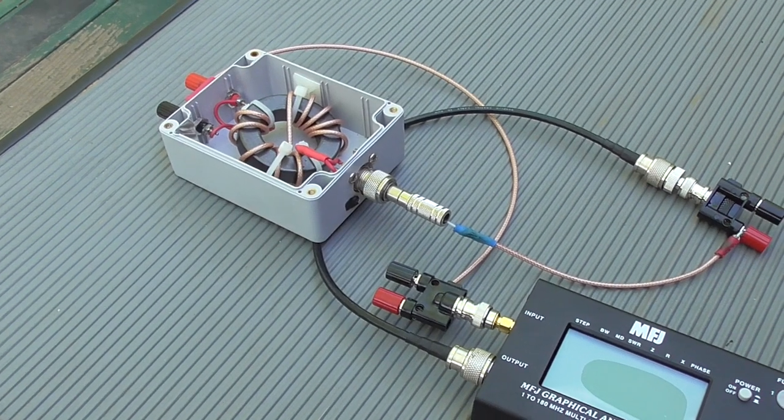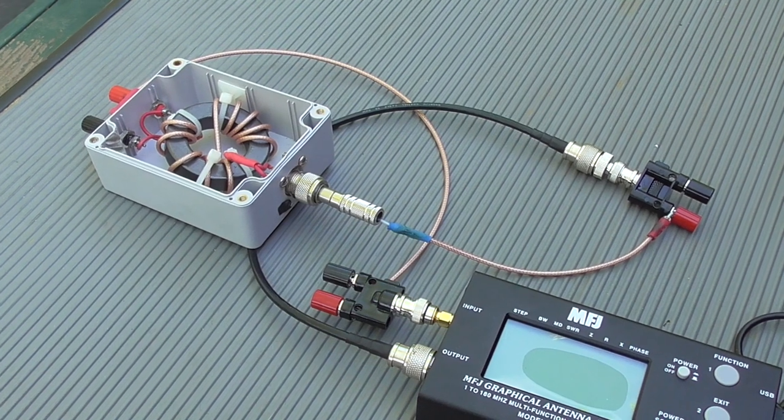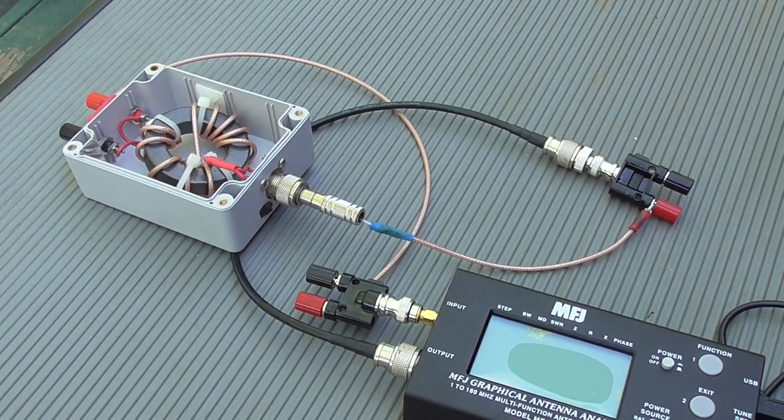So I started to think, how do we really know our balun works? After all, it's just coax wrapped around a ferrite core, and it's really hard to tell if it's doing anything in the transmission line.